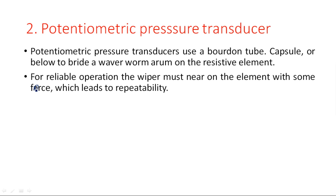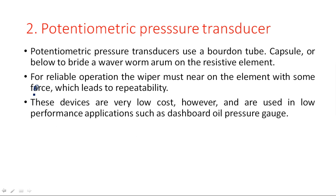The wiper must be connected with some force, which leads to repeatability. When pressure is applied, the wiper moves and its movement should be proportional to the applied pressure — the value shown by the meter must be proportional to P1 or P2. These devices are very low cost and are used in low performance applications such as dashboard or oil pressure gauges, because they are made up of potentiometers and resistors.